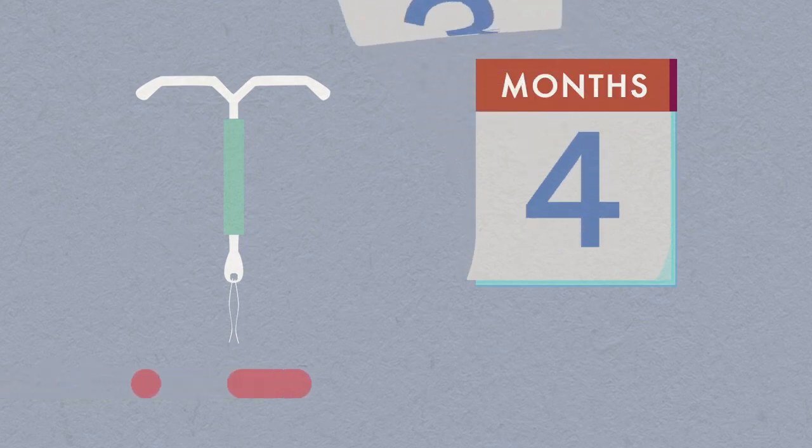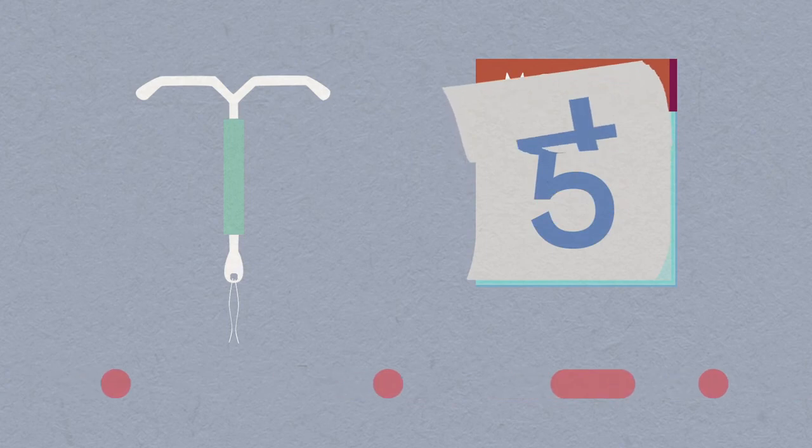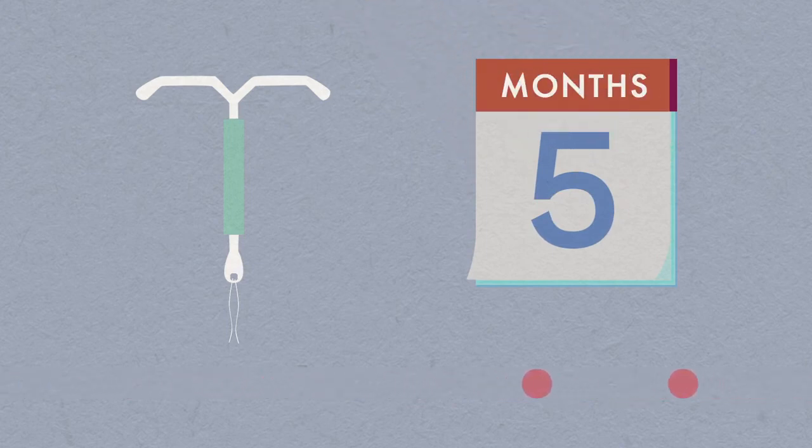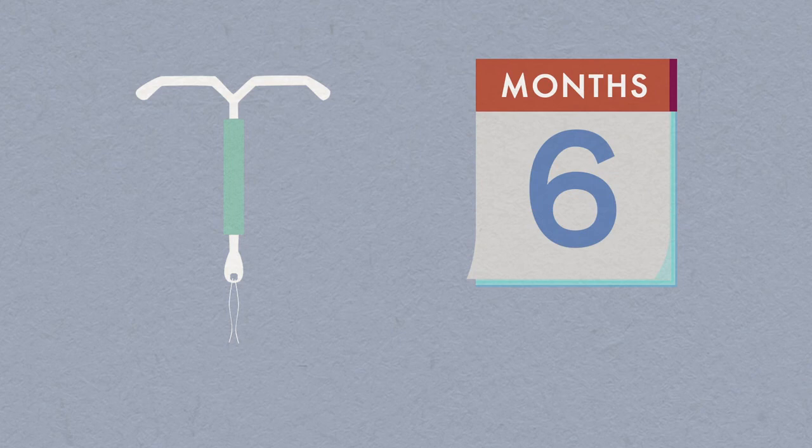the hormonal IUS can result in lighter, unpredictable bleeds known as spotting. This usually settles into infrequent lighter bleeds, or no periods. If spotting persists, we might suggest you also take the contraceptive pill for a while.